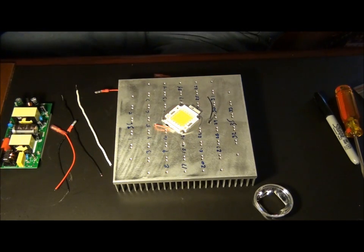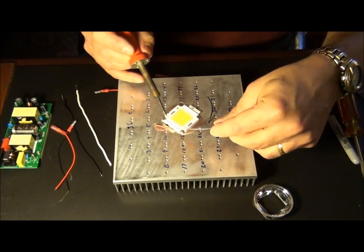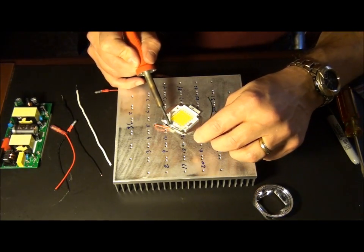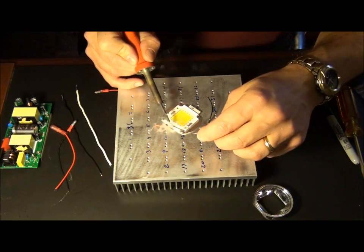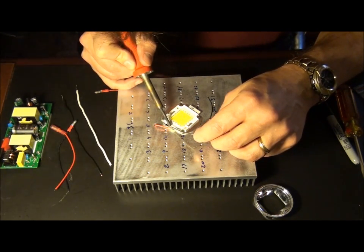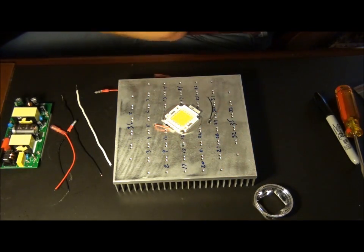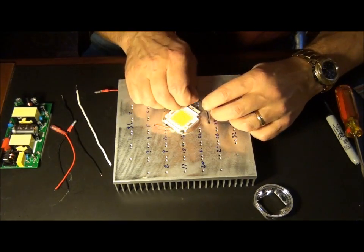Now I just need to take my handy dandy, very old, nasty soldering iron here, which has been around forever. And get a little solder on it, get on that tab, and just solder that wire on, just like that. Okay. That's my positive side.